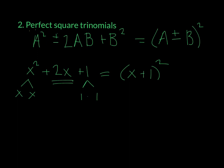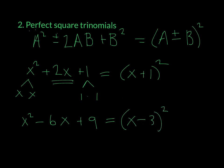Let's try a harder one. Let's say I have x squared minus 6x plus 9. Well, 9 is a perfect square and its root is 3. If I go negative 3 plus negative 3, I get negative 6. So I have x minus 3, squared, as the perfect square trinomial.